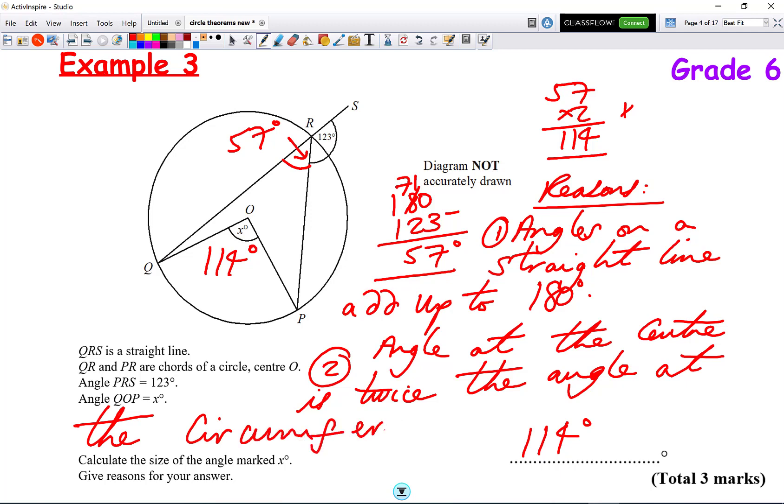Now, notice this question did ask for the reason, actually. There are cases where exam questions don't ask for the reason. However, in those instances, please make sure you always write down the reason, regardless. Most of the time in exam questions, they'll state very clearly, give reasons for your answer, but always make it a rule of thumb that you always write it down.